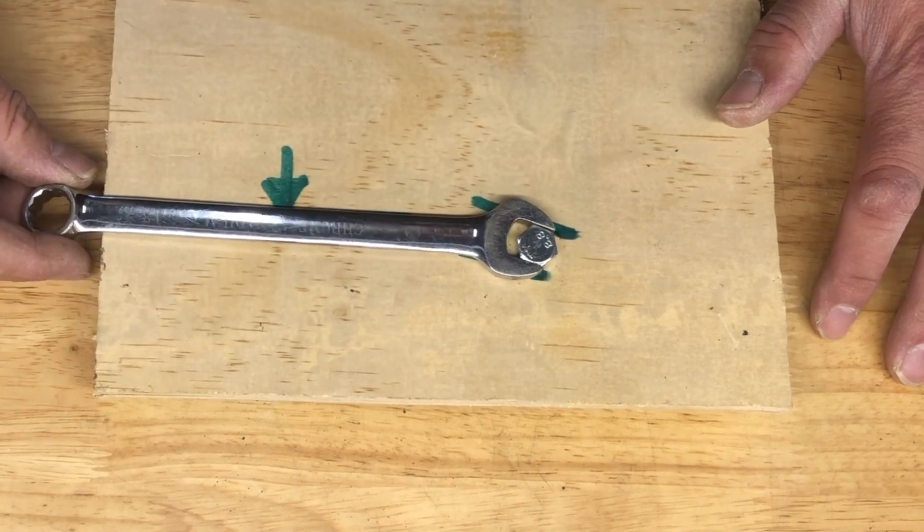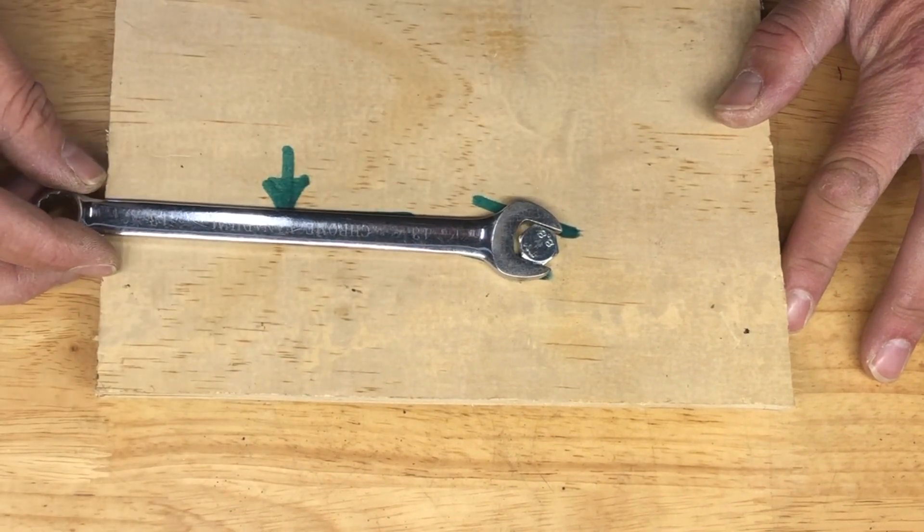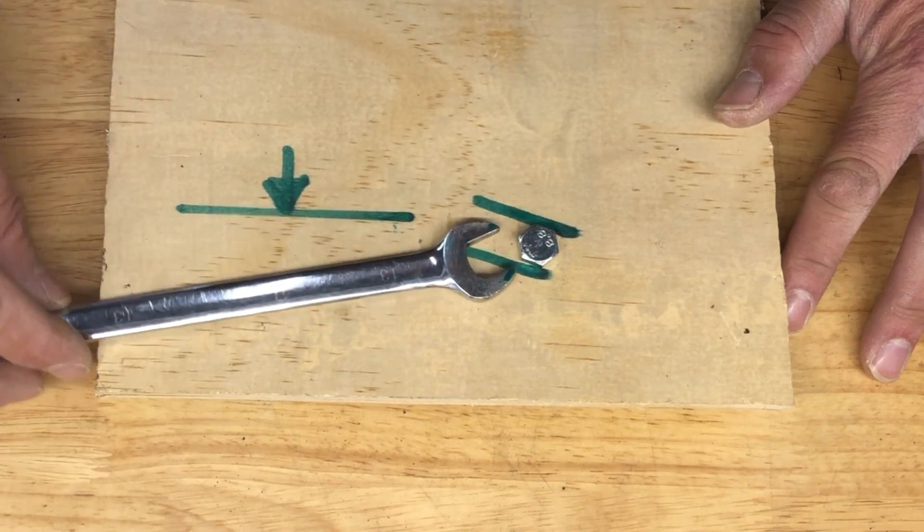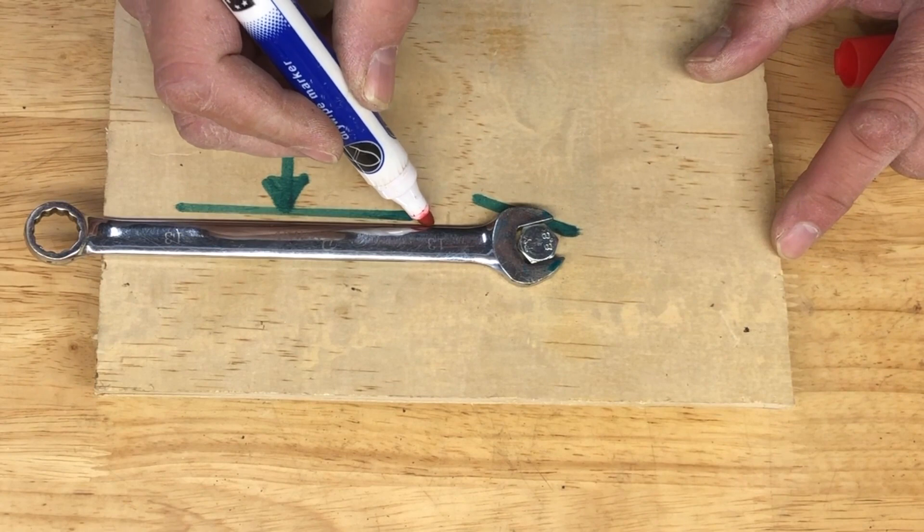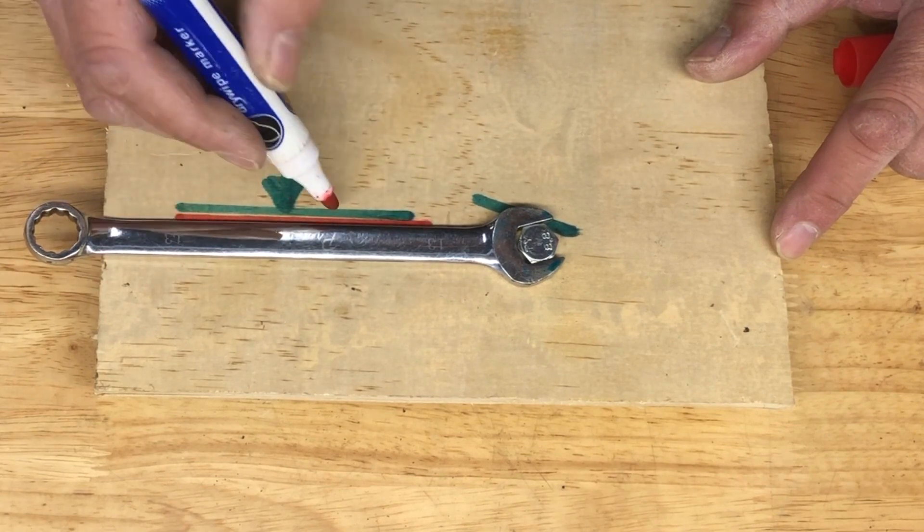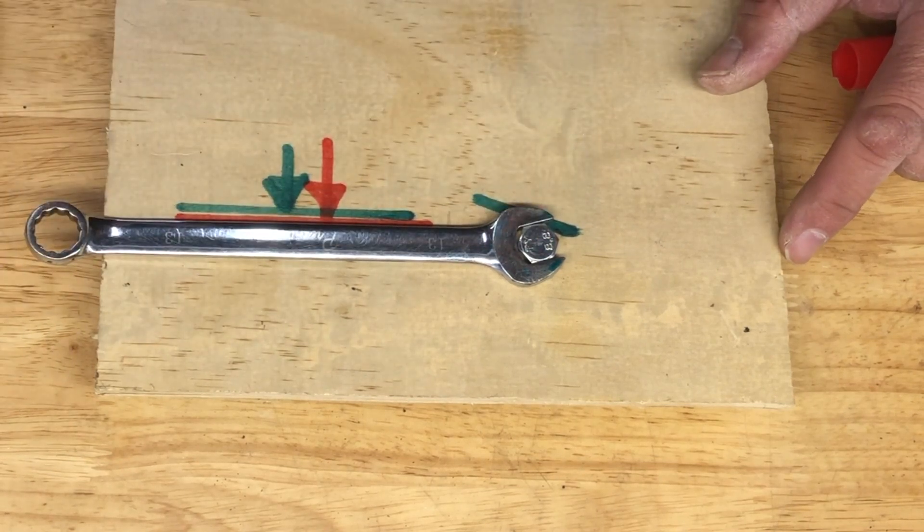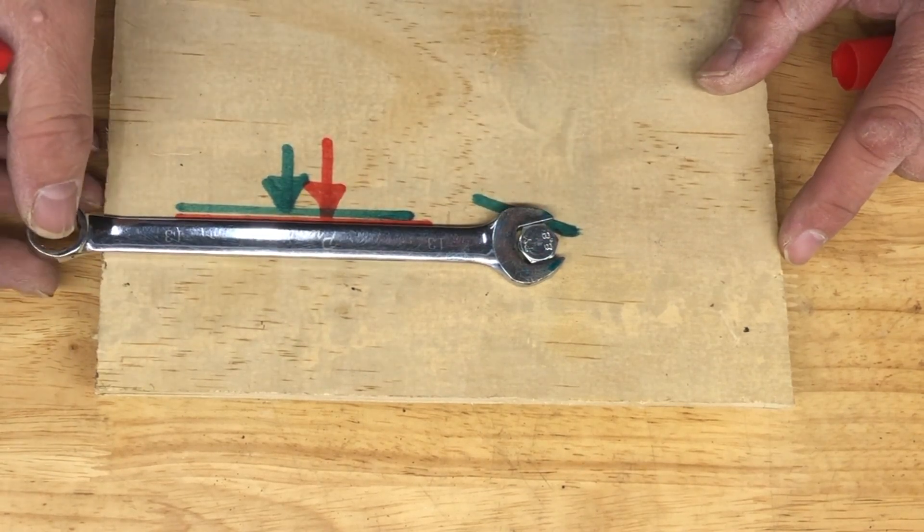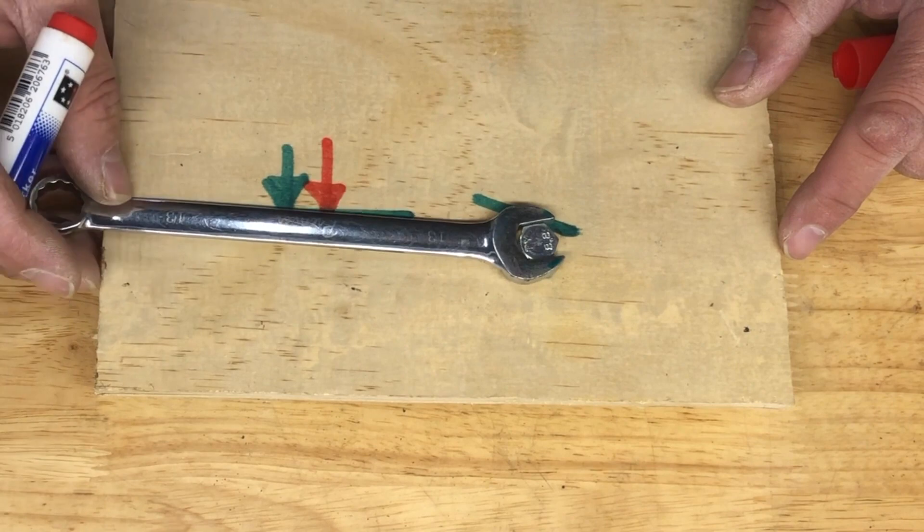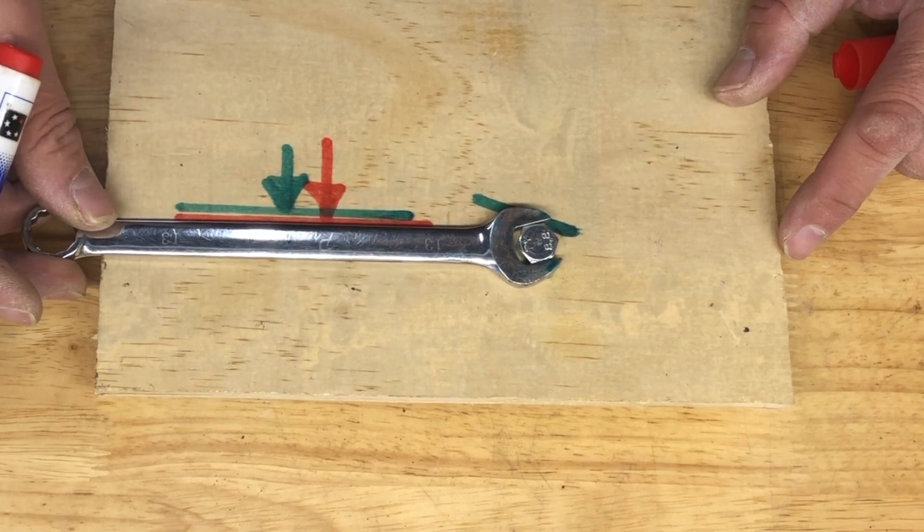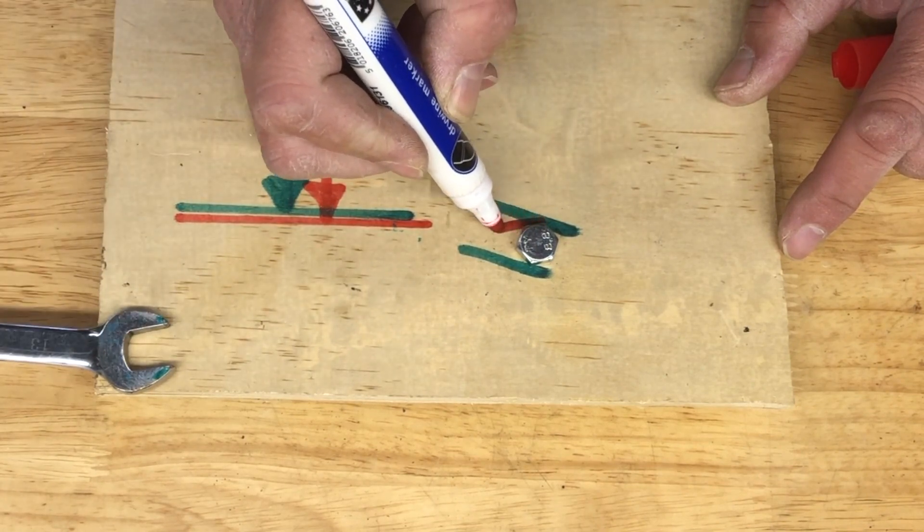If I go the opposite way, now the jaws are reversed and again I'm trying to put force on in this direction. I don't want it to slip off, but as I apply that force some of it is helping pull the spanner off because the flats on this...